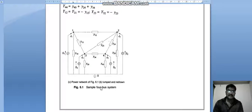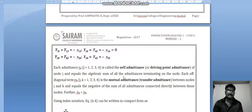Power network lumped and redrawn like this for sample power system. So Y31 equals Y13, that is equal to minus Y13. Similarly, Y14 equals Y41, that is equal to minus Y14 equals zero. Y24 equals Y42 equals minus Y24, and Y34 equals Y43 equals minus Y34.